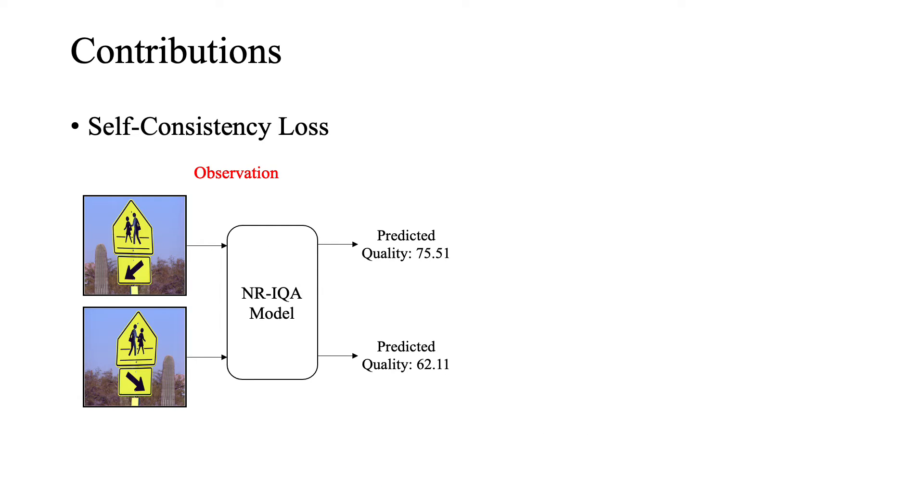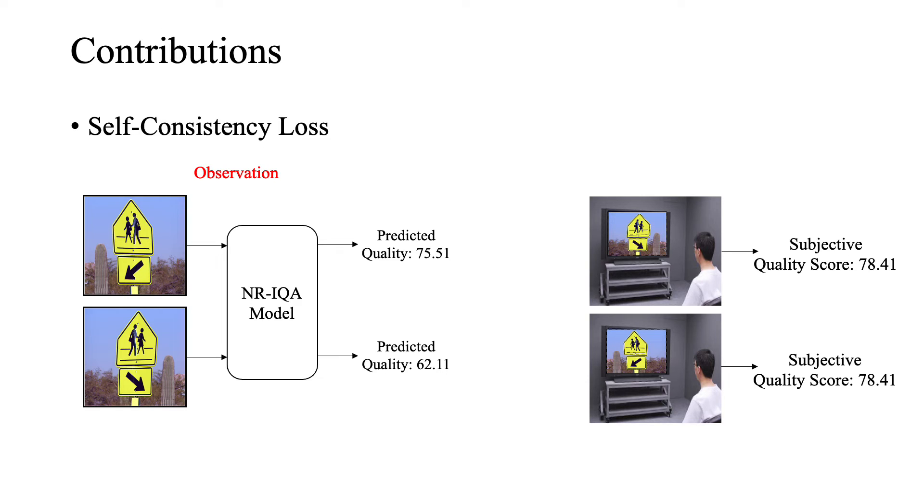Moreover, we observe that although we use different techniques such as augmentations to increase the generalization of the deep models, blind IQA methods cannot predict the perceptual image quality scores robustly when we apply a simple equivariant transformation, e.g. horizontal flipping to the input image. This contradicts with the way that humans perceive the quality of images. In other words, subjective quality scores remain the same for a specific equivariant transformation such as horizontal flipping. Therefore, we propose to use an equivariant transformation of the input image as a source of self-supervision to improve the robustness of our proposed model.